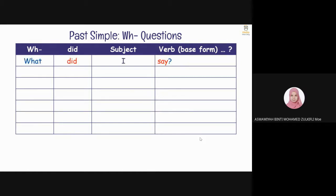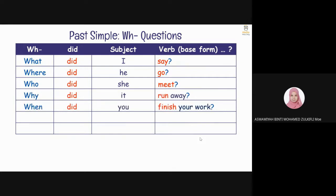For example, what did I say? Where did he go? Who did she meet? Why did it run away? When did you finish your work? Which did we receive? And lastly, how did they become famous?